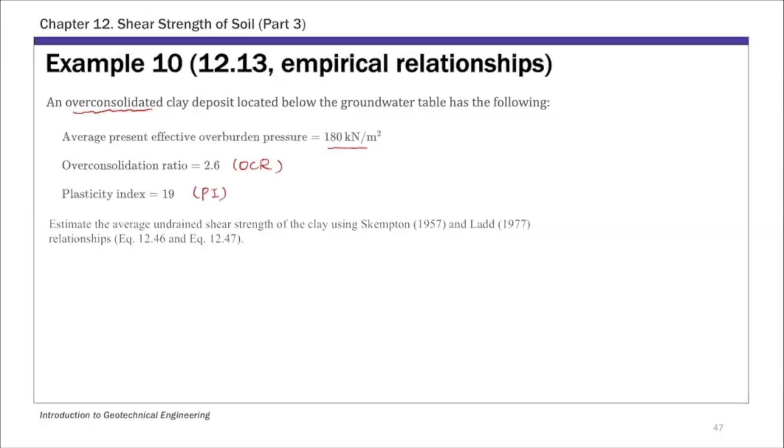First we're going to use the empirical correlation equations 12.46 and 12.47 to estimate the undrained shear strength. So for this one, first from equation 12.46, that's Skempton's equation, and that equation is for normally consolidated clay.